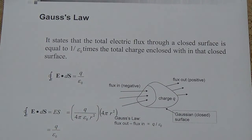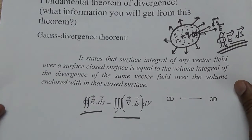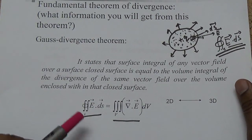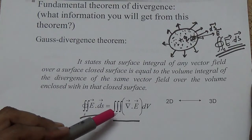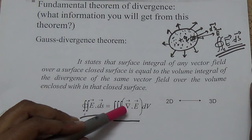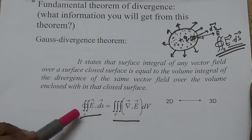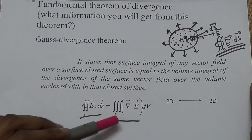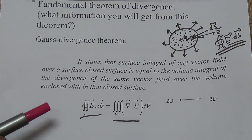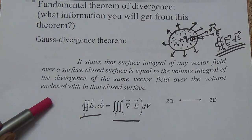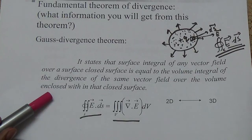After studying the concept of two basic fundamental theorems: the first was the Gauss Divergence Theorem, which provides the relationship about the closed surface integral E·dS and the volume integral of the divergence of the electric field — converting from closed surface to volume integral, from two dimensions to three dimensions.